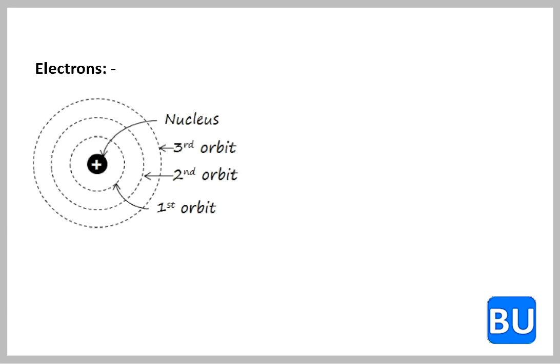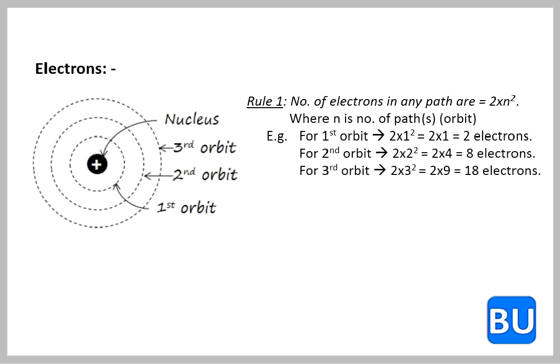The electrons in an atom are moving in circular way around nucleus in different paths. But, the number of electrons in any path may be different, and this is determined by three rules.